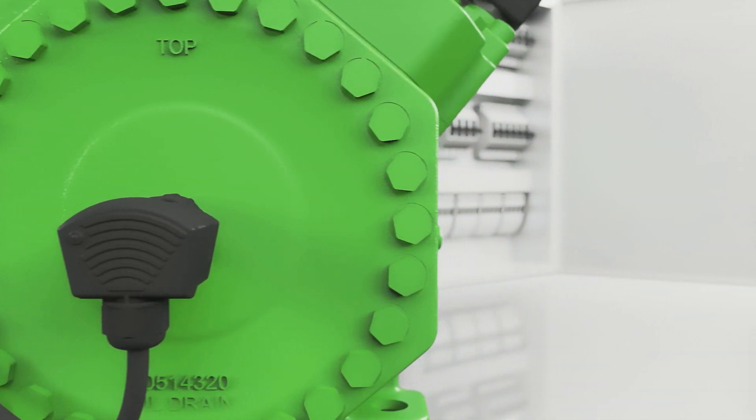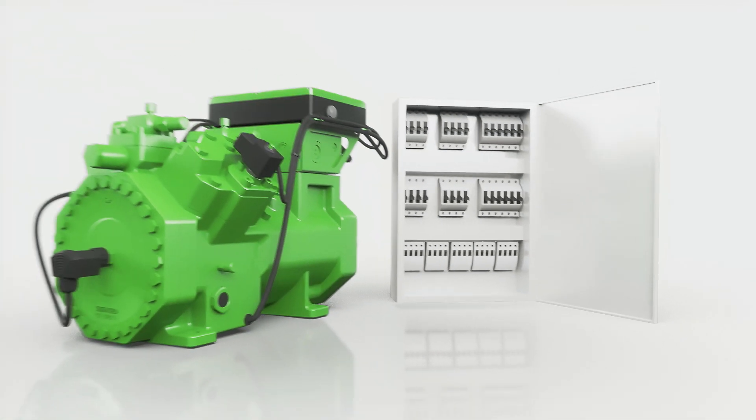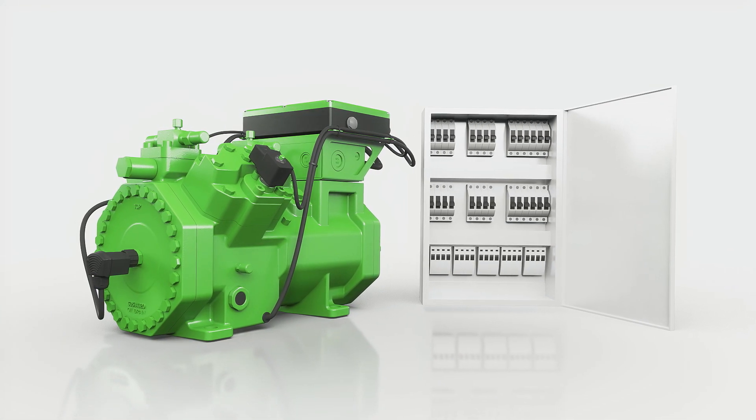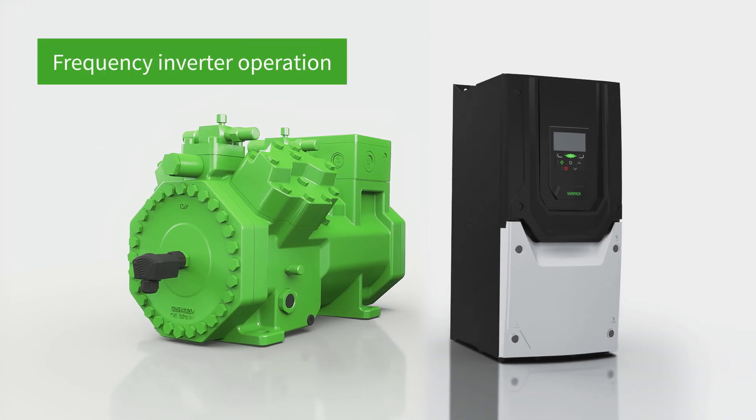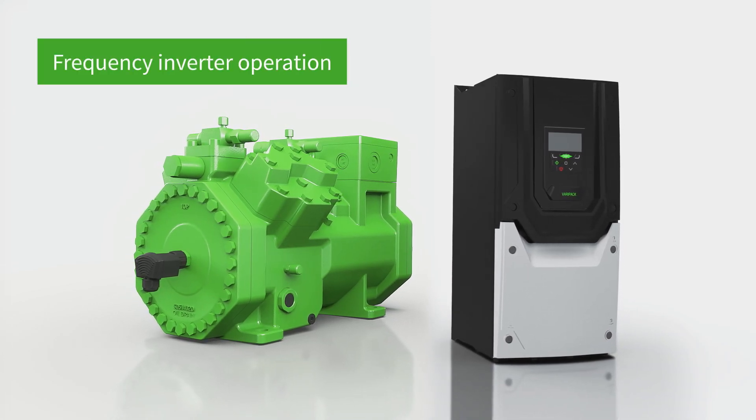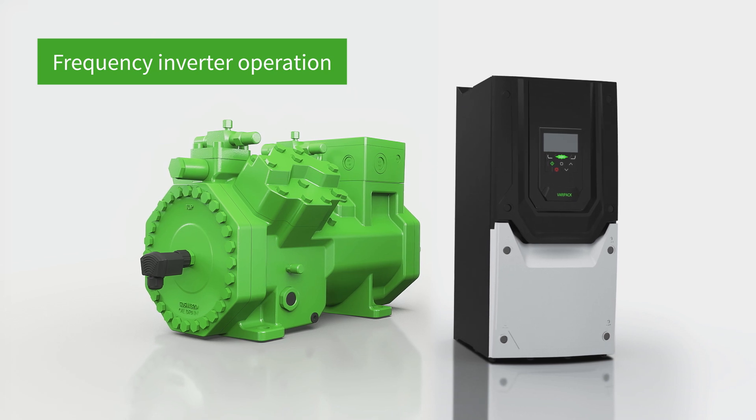Ecoline Plus compressors with LSPM motor can be connected directly to the power supply system or operated with Bitsa VariPak frequency inverter for simple and reliable capacity control.